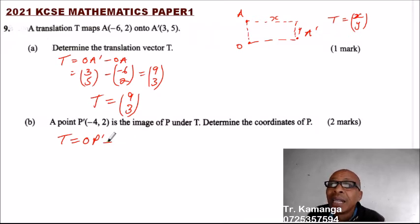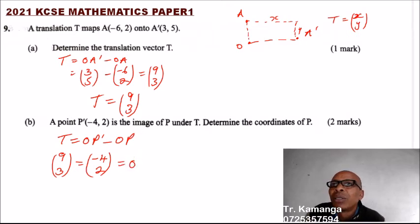T we have seen is (9, 3). Translation equals OP' written in column form, which is (-4, 2), minus OP.